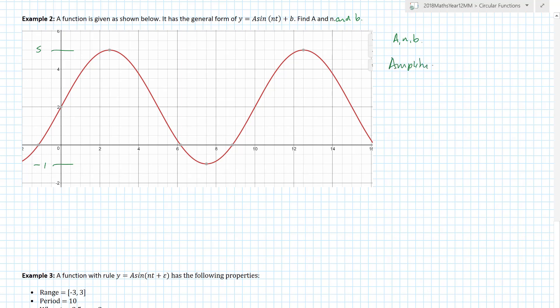Do I know the period of my graph? Well that seems to be the median, that seems to be the median, and the difference between the two is 10. And we know the period is 2π over n. So what do we say? It was 10 is equal to 2π on n, so n would be 2π on 10 which is π on 5. So that's my period, that's n found.